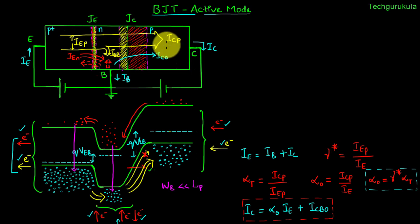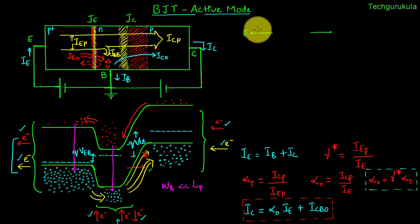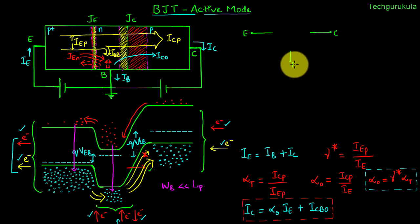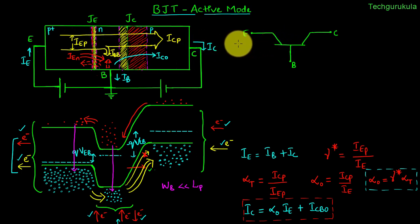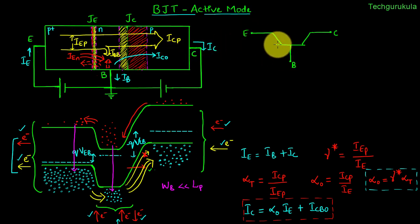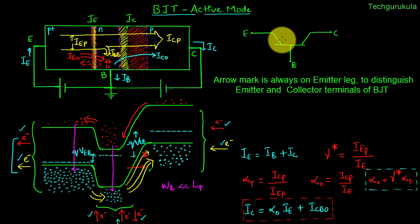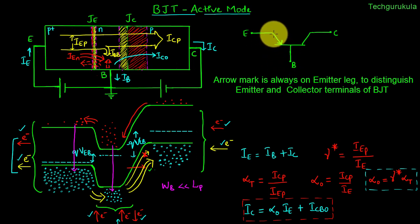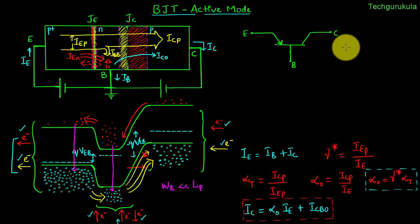The circuit symbol for a PNP transistor has two terminals — one representing the emitter and one representing the collector — plus a third terminal for the base. To distinguish a PNP from an NPN transistor, an arrow mark on the emitter indicates the direction of current flow when the emitter-base junction is forward biased. For a PNP transistor, the arrow points inward into the device.